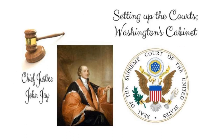Setting up the courts. Congress had many matters to decide that were not spelled out in the Constitution. One problem was how to divide authority between the state and federal courts. Congress passed the Federal Judiciary Act of 1789. This act gave the Supreme Court six members: a chief justice and five associate judges. The current number is nine. The act also provided for other lower federal courts. John Jay was appointed chief justice.